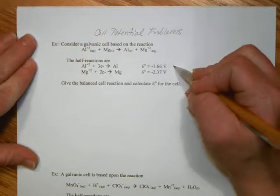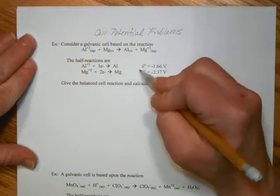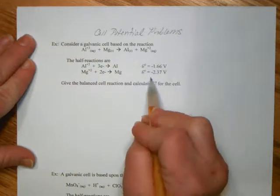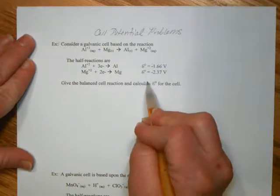will be the one that we flip, change the sign of, so that when we add these half EMF values, half-reaction EMF values, it will give us a positive E of our cell overall.